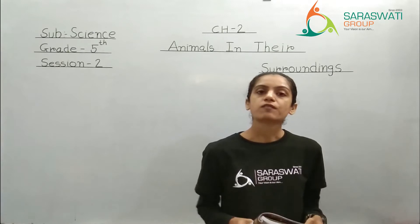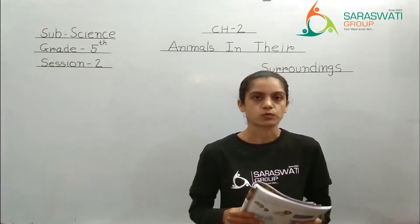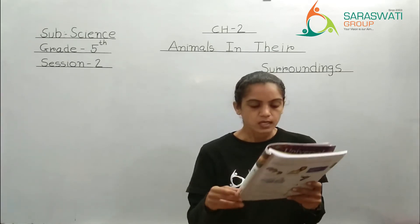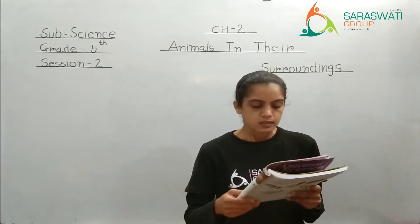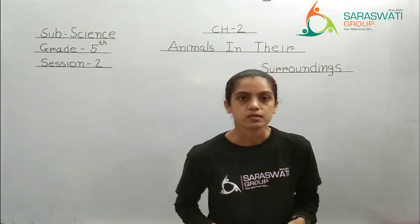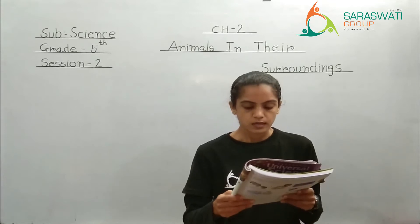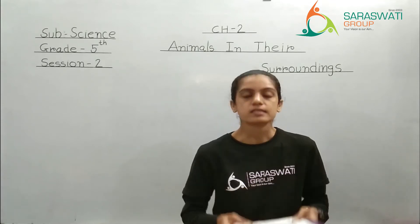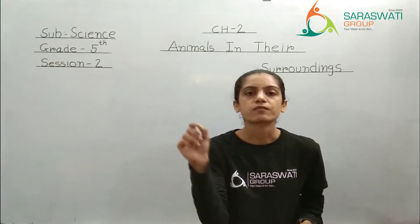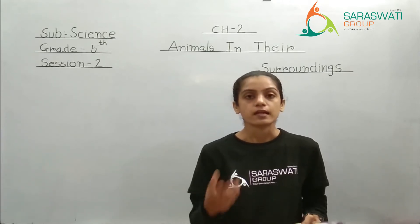Kids, you have to underline the definition of habitat in your textbook. Start from the third line: 'The place where an animal lives, feeds and reproduces is called its habitat.' Underline up to the word 'habitat.' Clear? Let's read further.